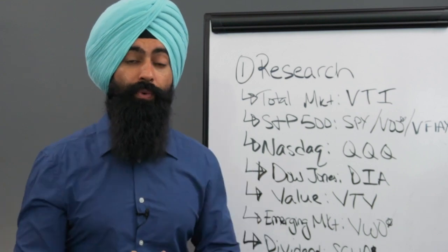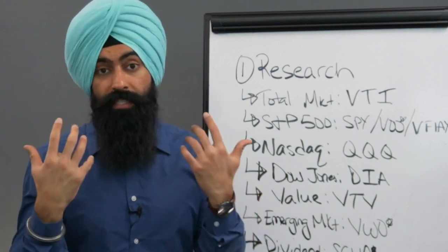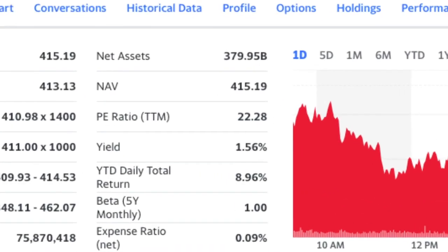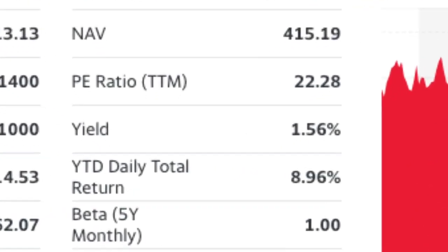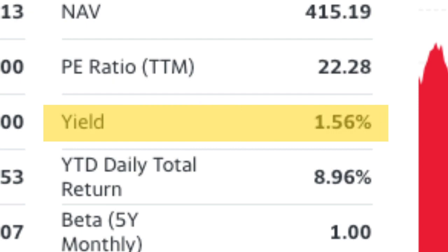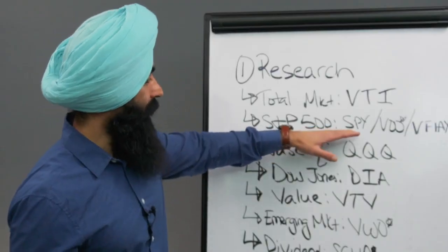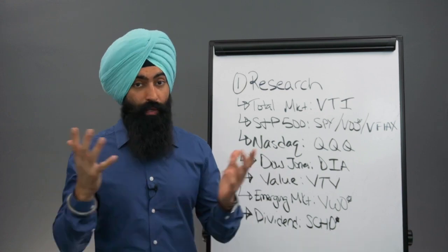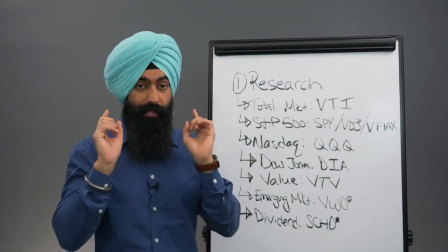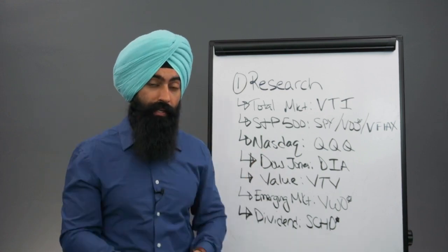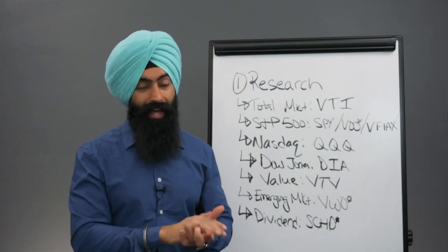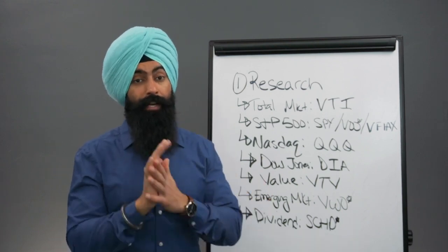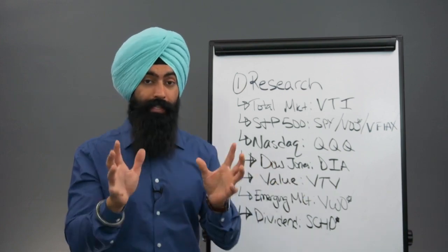The second thing to understand is the yield — this is the dividend, the cash flow that you get. Sometimes you're investing in funds specifically for the cash flow, and other funds may be paying cash flow as well. This yield is the cash flow you will receive. So if it says it's a 1% yield, that means if you invested $100 today, you will get $1 in cash flow just for owning the investment — not for selling the stock, but just for owning it.